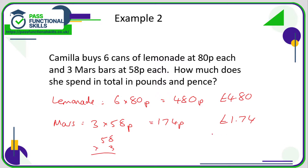So the total is going to be these two numbers added together. Put a decimal point in line: 0 plus 4 is 4; 8 plus 7 is 15, carry the 1; that gives 4, 5, 6. So the total in pounds and pence is £6.54.